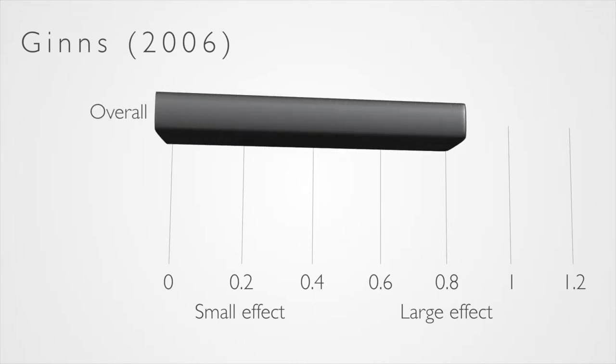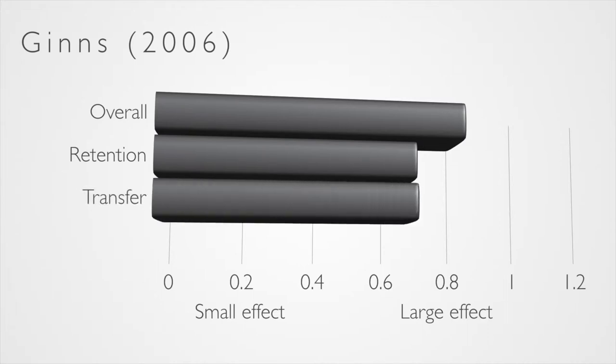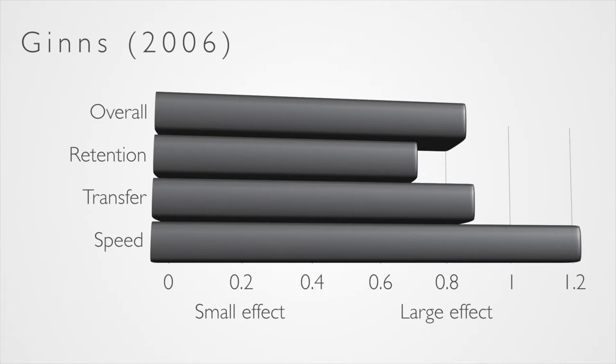In a meta-analysis of 13 studies, Paul Gins found a large effect from temporal contiguity. This applied to scores on retention measures, transfer to other similar tasks, and measures of how quickly students completed tasks. See how much easier it was to follow that graph when the bars came out one at a time. And when you do this well, you don't have to do any signalling because the animation is the signal.